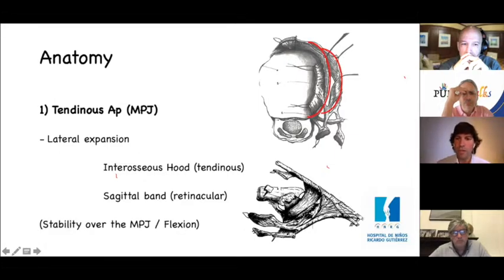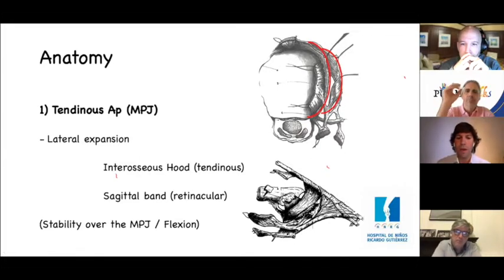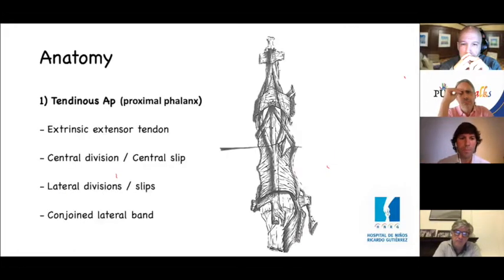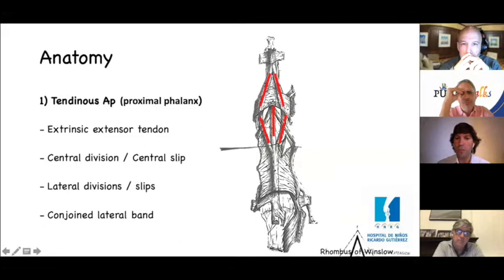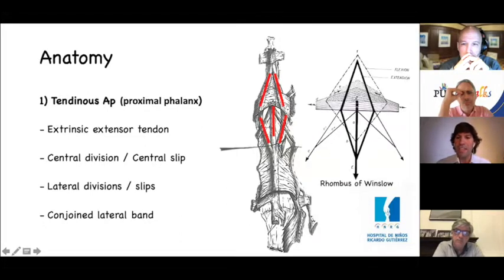The function of these structures is to provide stability of the extensor mechanism over the MP joint and to allow flexion of the MP joint. The extensor mechanism has a central slip and two lateral slips that join the lateral bands to form the conjoined lateral bands. This rhomboid shape was described by Winslow and has a very important function in the biomechanics of finger flexion and extension.